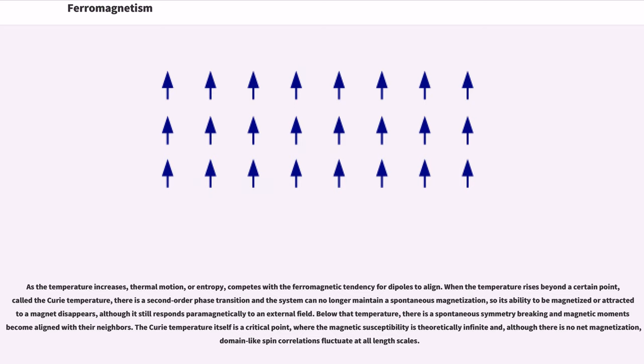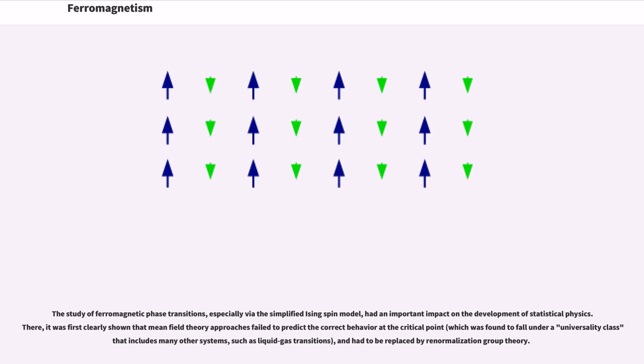The Curie temperature itself is a critical point, where the magnetic susceptibility is theoretically infinite and, although there is no net magnetization, domain-like spin correlations fluctuate at all length scales. The study of ferromagnetic phase transitions, especially via the simplified Ising spin model, had an important impact on the development of statistical physics.